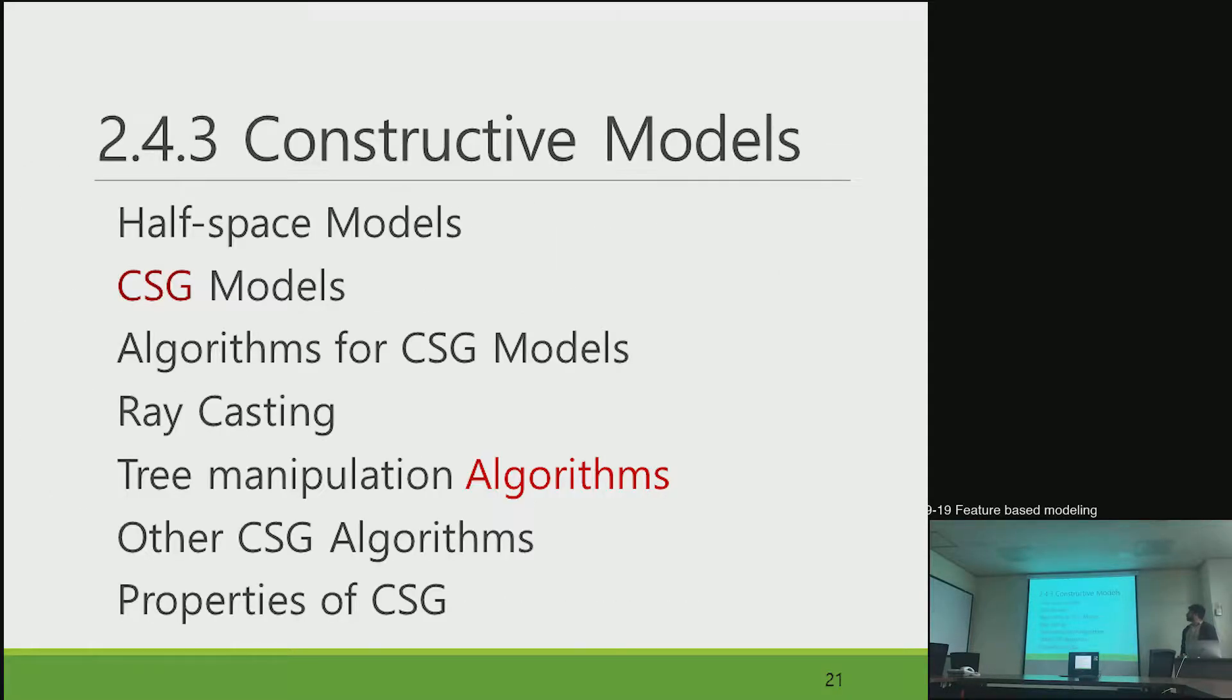Now, come to the constructive models. There are constructive models for CSG, constructive solid geometry. There are many different types, based on the visualization of half-space models, CSG models. And there are different algorithms for CSG models. And raycasting is a method to see the model, and there's tree manipulation and other algorithms for CSG and the properties of CSG, which I will explain.